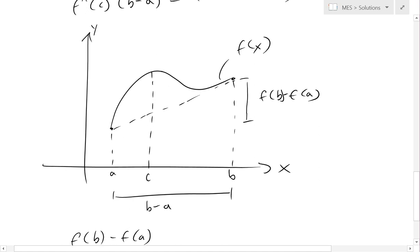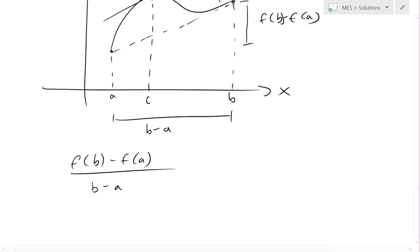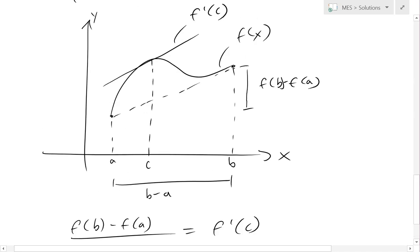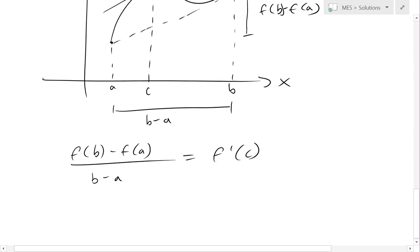That's just the average slope across. And then this theorem says that there's a number c such that the derivative at that point — f'(c) — is equal to this average slope, or this average derivative across the whole thing.